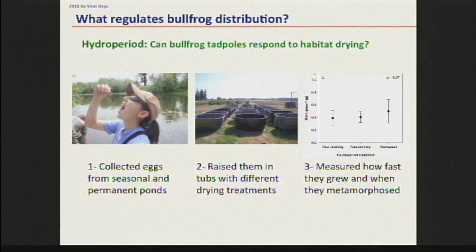What we found was that bullfrogs were not increasing development rates as water levels decreased. We measured tadpole mass after 60 days and saw no increase in mass or development rates in the draining treatments compared to the permanent treatment. So it looks like bullfrogs are not responding to habitat drying. There was natural variation in the rate of development across different clutches — some developed quickly and could get out within 60 days — but it had nothing to do with where we found them. It doesn't look like it's a plastic trait, and it doesn't look like they're evolving to be able to do this.